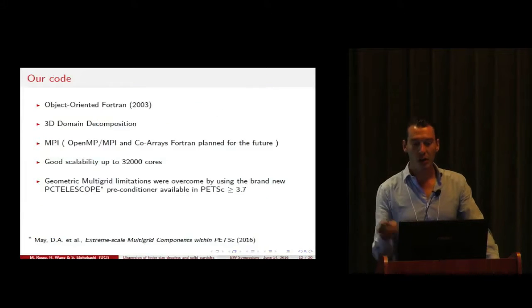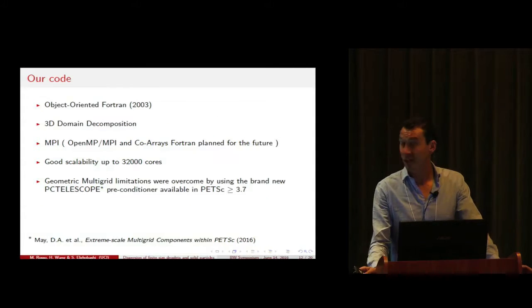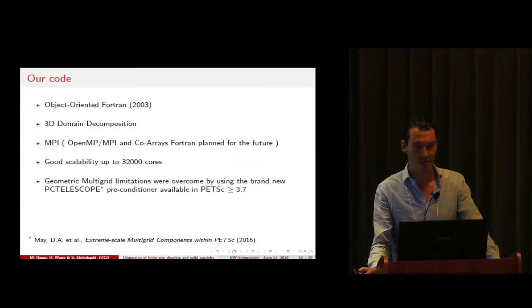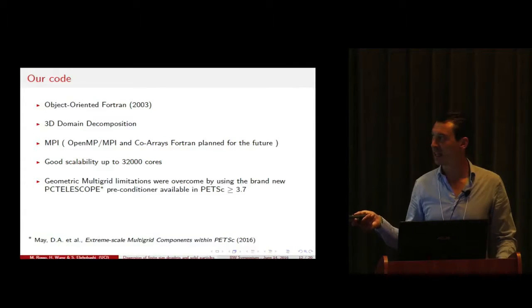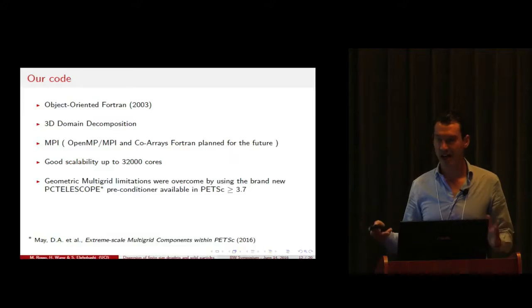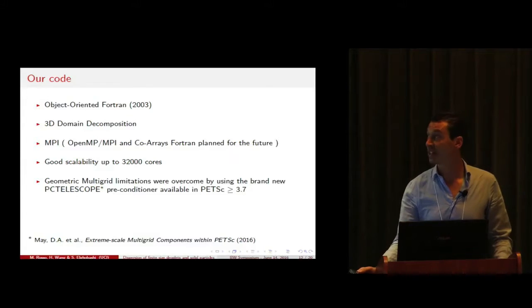Our code has been written in object-oriented Fortran standard 2003 and has been parallelized with MPI. We use currently a 3D domain decomposition and we are also looking forward to extend the capability of our code by using OpenMP, MPI, and eventually Coarray Fortran in the near future. We have good scalability up to 32,000 cores and we're looking forward to improve it past that point.